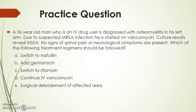Let's work through a case. A 36-year-old man who is an IV drug user is diagnosed with osteomyelitis in his left arm. Due to suspected MRSA infection, he is started on vancomycin. Culture results reveal MSSA. No signs of spinal pain or neurological symptoms are present. Which treatment regimen should be followed? The answer is switch to nafcillin. Most of the time, vancomycin is not quite as efficacious as synthetic penicillins. Adding gentamicin is very toxic. Switching to rifampin is not indicated in this case. Continuing IV vancomycin can lead to toxicity and is not necessarily as efficacious. Surgical debridement is reserved for treatment-resistant osteomyelitis or cases such as spinal abscesses.